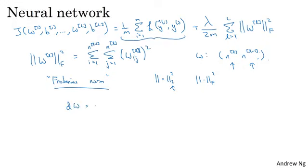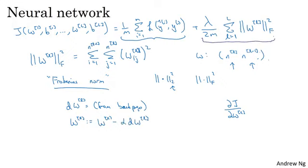So how do you implement gradient descent with this? Previously, we would compute dW using backprop, where backprop would give us the partial derivative of J with respect to W, for any given L. And then you update WL as WL minus the learning rate times dW. This is before we added this extra regularization term to the objective. Now that we've added this regularization term to the objective, what you do is you take dW and you add to it lambda over m times W. And then you just compute this update same as before. And it turns out that with this new definition of dWL, this is still a correct definition of the derivative of your cost function with respect to your parameters, now that you've added the extra regularization term at the end.